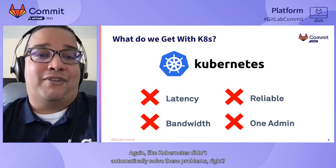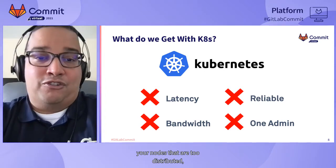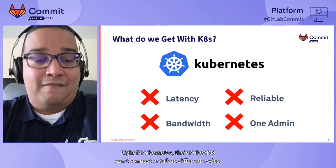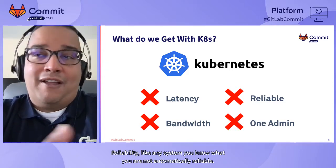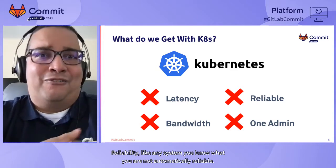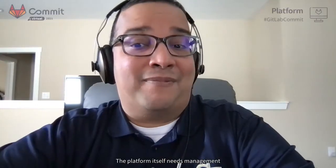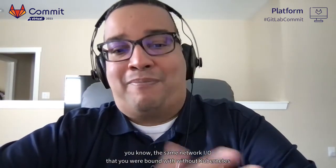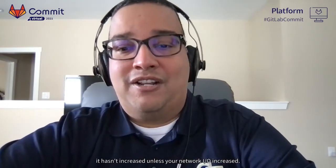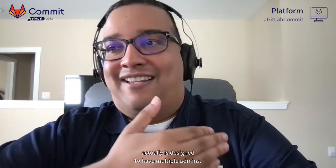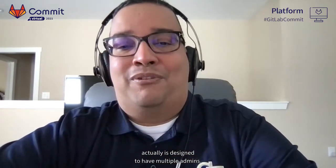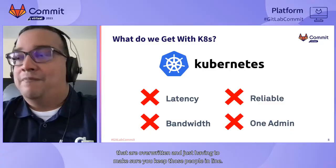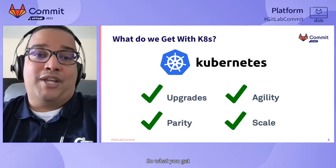Kubernetes didn't automatically solve these problems. You still have latency — if your nodes are too distributed they might get marked as unhealthy if latency is too high. Reliability isn't automatic; the platform itself needs management, and your workloads aren't automatically more reliable. The same network I/O you were bound by without Kubernetes hasn't increased unless your network I/O has increased.